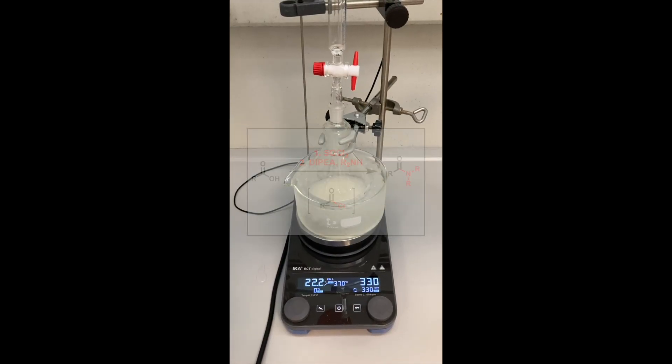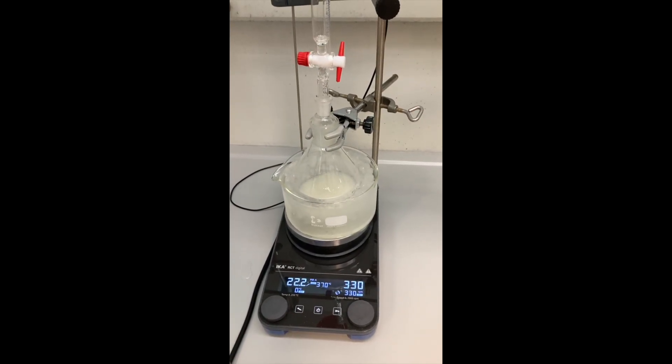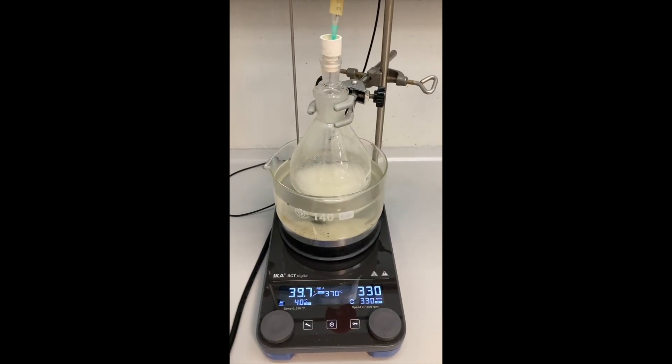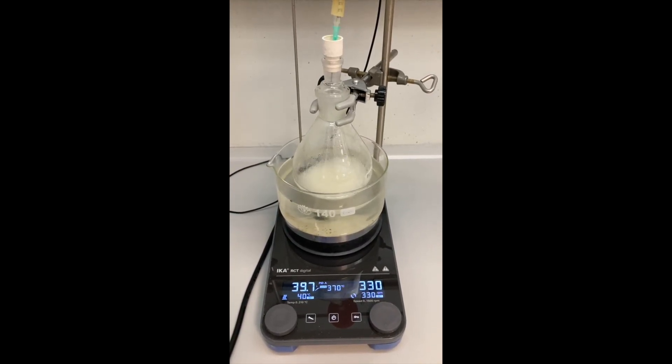Into a suspension of the carboxylic acid in dichloromethane at 0°C, I added thionyl chloride. After that, I stirred the reaction mixture at 40°C in order to produce the acid chloride.